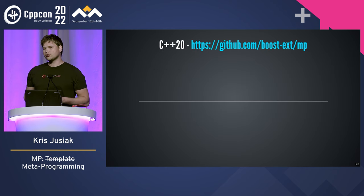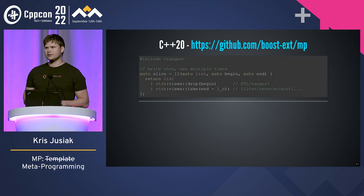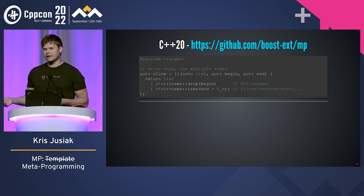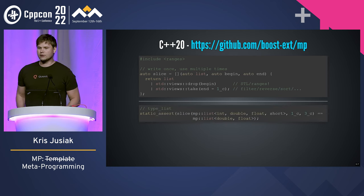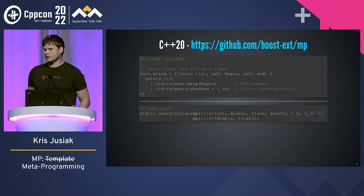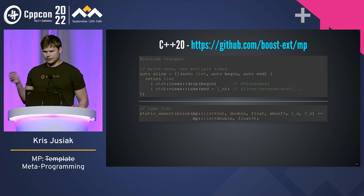Let me show some other use cases with C++20. Let's try to do a slice using std ranges at compile time. We have a slice that takes a list, a begin and end. We have the list, we pipe it to drop and take. Notice the underscore C because we don't have constexpr parameters, so we have to do a bit of magic, but not much. We can apply it to a list — MPList of double, float, short — and slice the first up to the third, getting double and float.